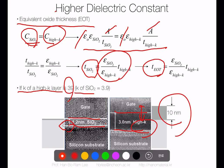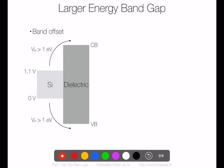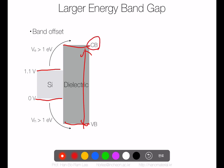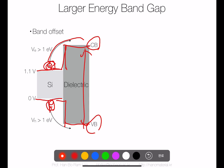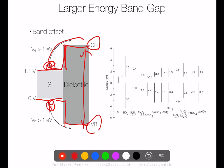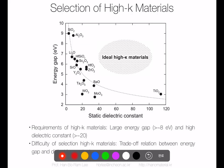Another reason for using high-k is the band gap. Silicon has a band gap of 1.1 eV. The dielectric layer on top of silicon must have a larger energy band gap, and the band offset must be high — otherwise electrons in the conduction band or valence band can jump into the dielectric's conduction band. Some high-k materials have a very small band offset compared to silicon, so band offset is a very important factor in selecting high-k material.